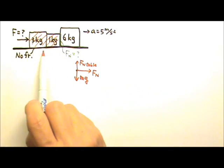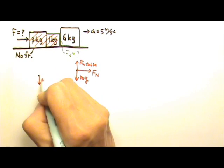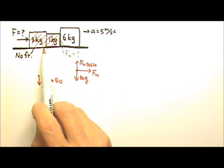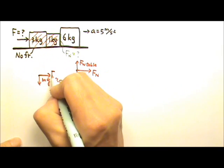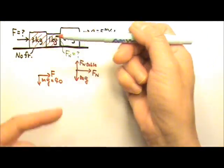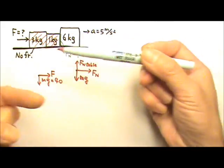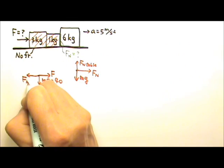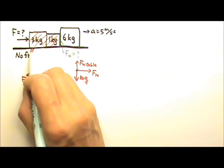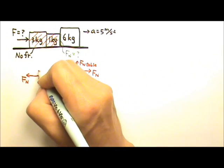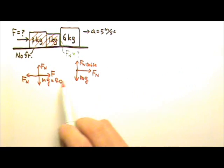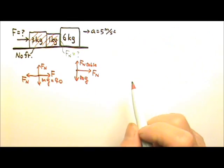Now for the 4 kilogram block: Mg is 40 newtons. This block is touching three things — the pushing force, the contact surface with the 6kg block, and the bottom surface. The pushing force is unknown. The contact surface has a normal force — this normal force and the one on the 6kg block are equal and opposite action-reaction forces. The bottom surface gives a normal force upward, no friction. We have a two-dimensional situation, so we handle x and y — horizontal and vertical — separately.